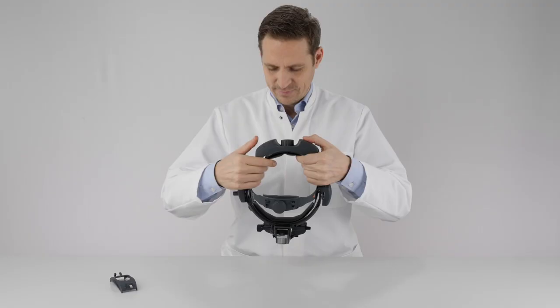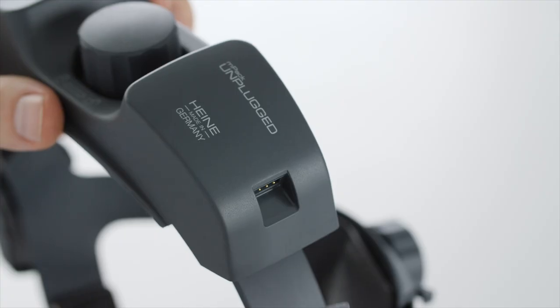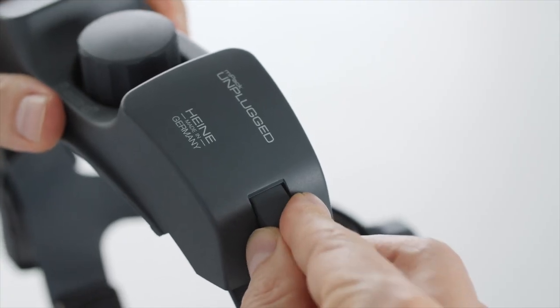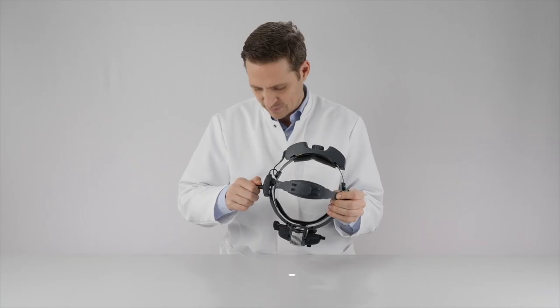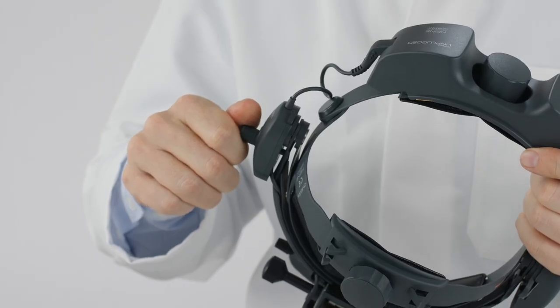Then attach the short connection cable of the brightness controller to the battery. Now the instrument can be switched on using the brightness control, and the brightness can be regulated accordingly.